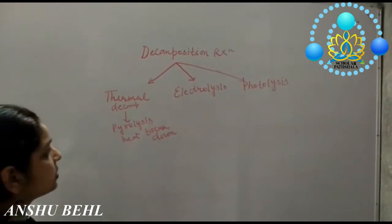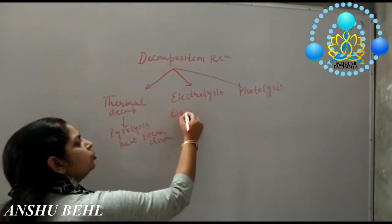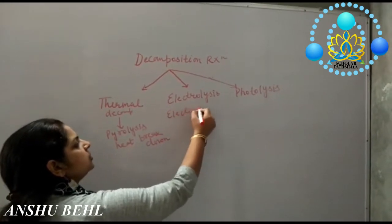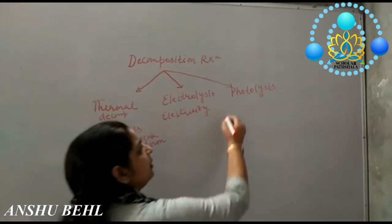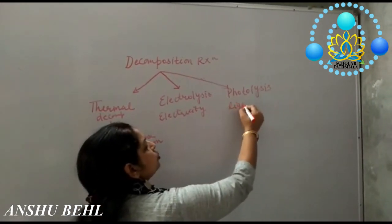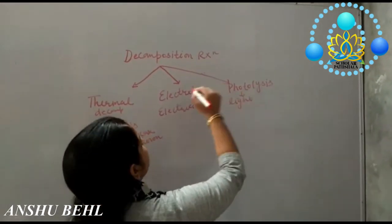When electricity is used to break down a substance it is called as Electrolysis. And when any form of light is used to break down a substance it is called as Photolysis.